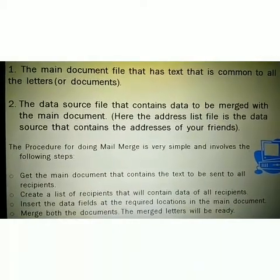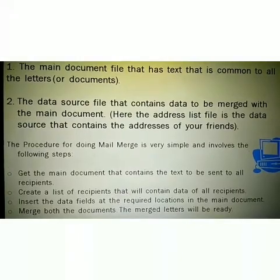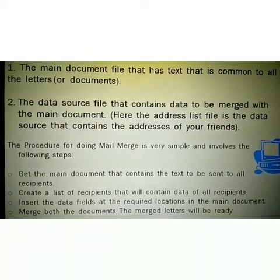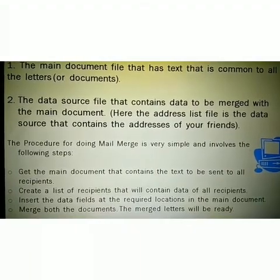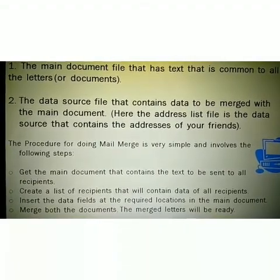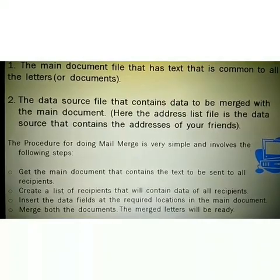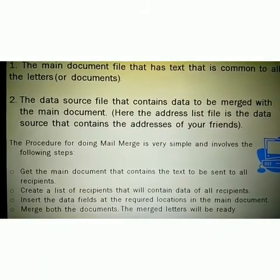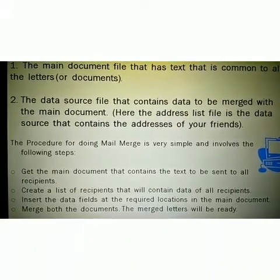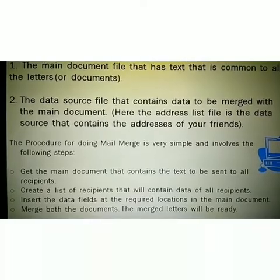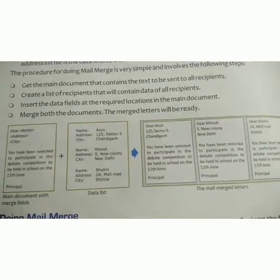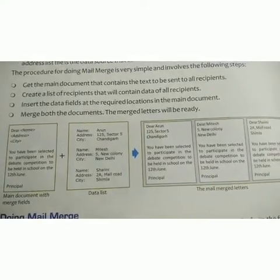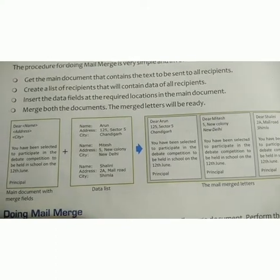The procedure for doing Mail Merge is very simple and involves the following steps. First, get the main document that contains the text to be sent to all the recipients. Then create a list of recipients that will contain data of all the recipients. Insert the data fields at the required location in the main document. Then merge both the documents — the merge letter will be ready. This is the main document with merge field, then the data list, and finally the Mail Merge letters.